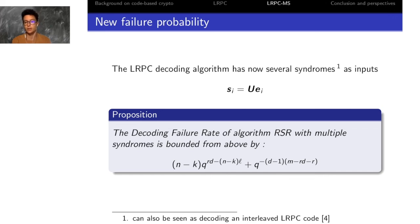The approach of using several syndromes to improve the decoding performance of the LRPC code can also be seen as what is called the decoding of an interleaved LRPC code, and was also recently presented in a paper by Renner, Jarkovic, and Pretz.